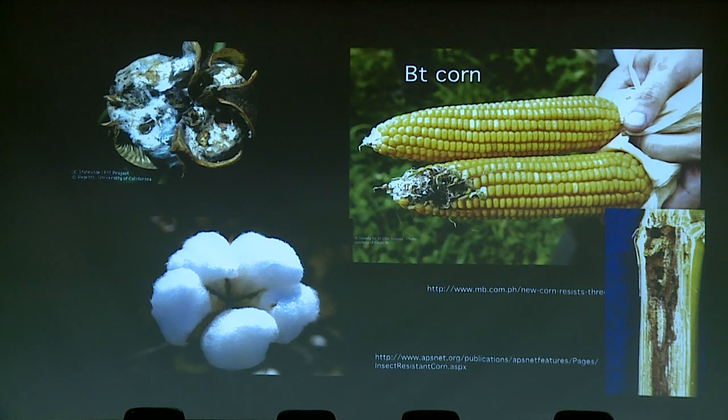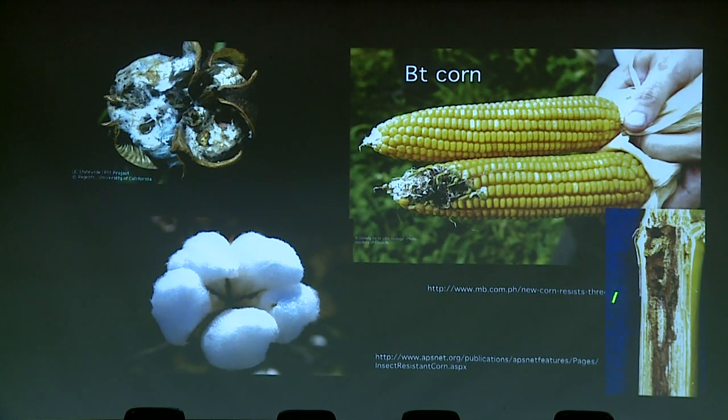Among the best known GMOs are BT maize and BT cotton. BT versions are protected from certain insect pests by a gene from another soil bacterium called Bacillus thuringiensis. The gene codes for a protein that is toxic to the insect pests but totally harmless to people and animals. The point I'd like to make very forcefully is that this has been an important step.